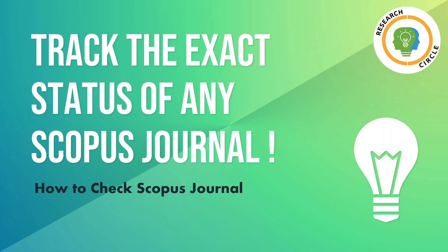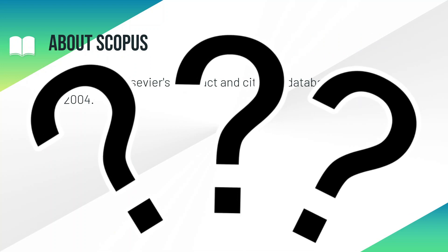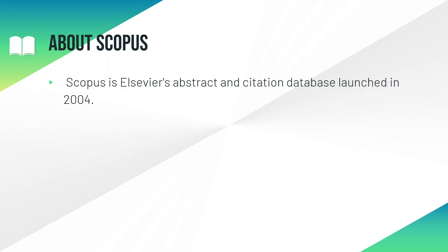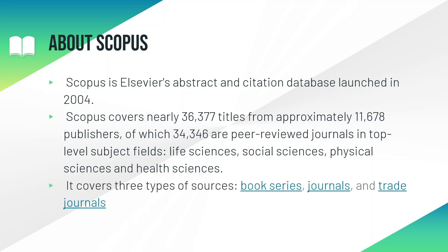So let's get started. First, what is Scopus? Scopus is Elsevier's abstract and citation database, launched in 2004. Scopus covers nearly 36,000 plus titles from approximately 11,000 to 12,000 publishers. It covers three types of sources: book series, journals, and trade journals.